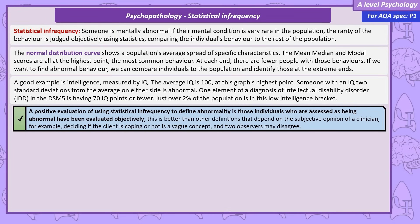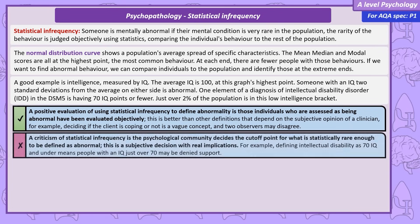However, the judgement of who receives support and who doesn't isn't dependent on the potentially subjective opinion of a clinician. We can criticise statistical infrequency by pointing out that the place the psychological community says low intelligence ends and normal intelligence starts is a subjective decision and will affect a large number of people. It could be that someone has an IQ score just one point higher than the cutoff and is denied treatment. Deciding where to split low and normal IQ has real-world implications on those people it affects.